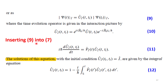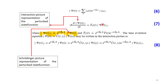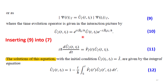We insert equation nine into equation seven, substituting the value of psi_I(t) to obtain equation eleven. The solution of equation eleven with the initial condition U_I(t_i, t_i) = I is given by the integral equation twelve: U_I is the solution of equation eleven.